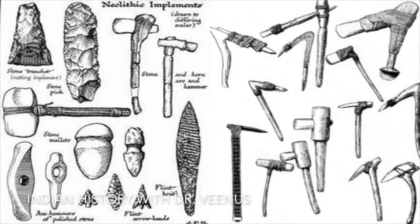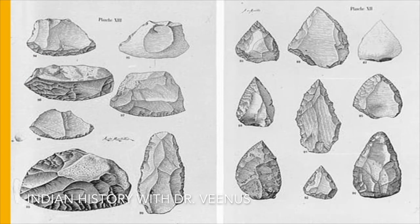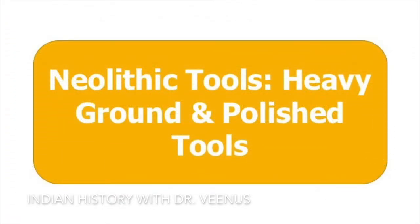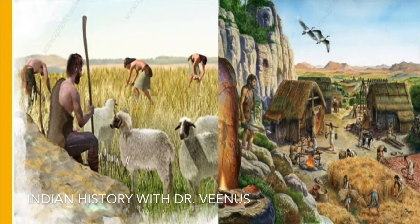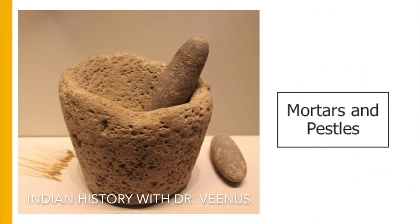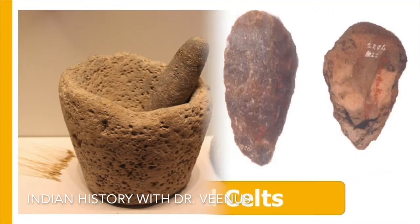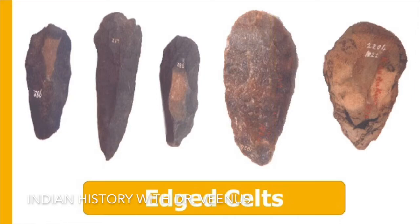Archaeologists take the polished stone axe as the hallmark of Neolithic equipment. Unlike the lighter and sharper tools of the Paleolithic and Mesolithic, the Neolithic toolkit was composed of heavy ground and polished tools: chisels, celts, axes, sickles, pestles, mortars, grinders and pounders, and stone axes, as well as bone tools for harvesting wild or domesticated plants and animals. Mortars and pestles were used for grinding grains, whereas edge celts were used for tilling and digging the ground.